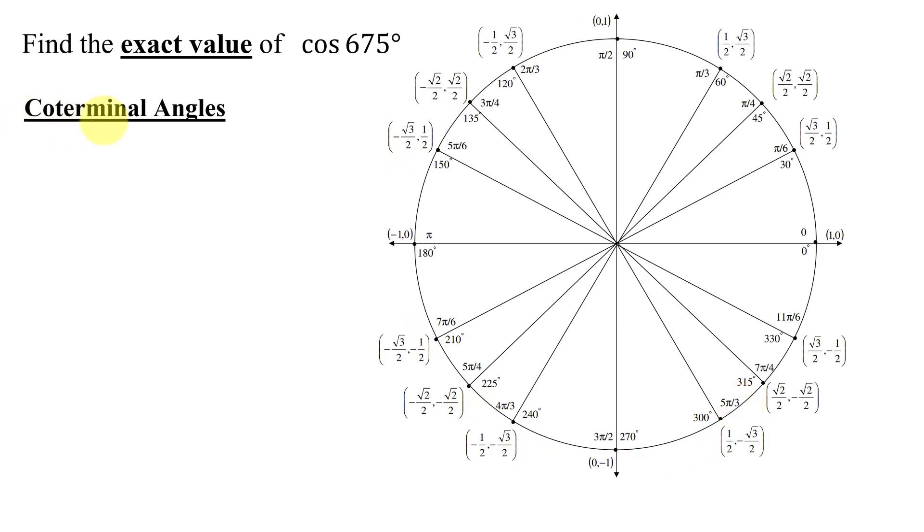Now remember, coterminal angles differ by one revolution. And as this problem is in degrees, that means they're going to differ by 360 degrees. And I need an angle smaller than my given angle. So you take your given angle of 675 degrees, subtract one revolution of 360 degrees. 675 minus 360 is 315 degrees.